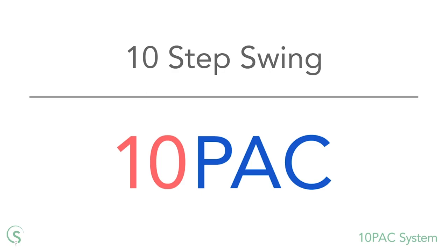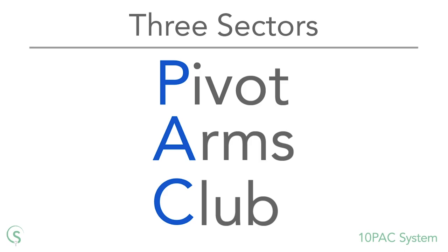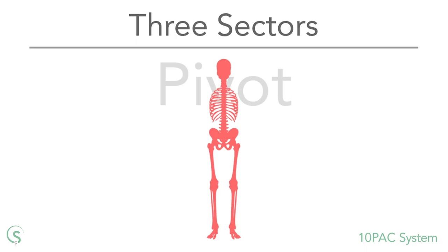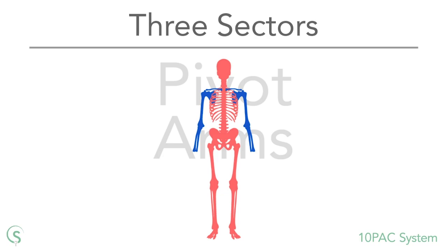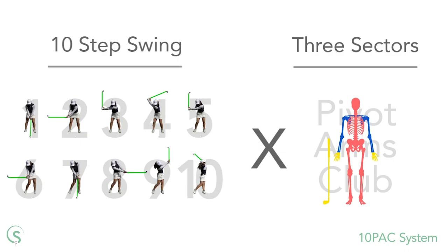Now onto the pack part. So far we've divided the golf swing by time, but we can also separate it by location — the different parts of the body and club. PAC represents the three sectors of the golf swing: the pivot, the arms, and the club. The pivot is made up of the rib cage, the spine, the pelvis, the legs and the feet. The arms include the shoulder complex, the upper arms and the forearms. The club sector is comprised of the wrist joints, the hands and the club. By multiplying the 10-step swing by the three sectors, we can instantly divide any swing into 30 unique parts, and each of these can be given an alphanumeric code for easy reference.